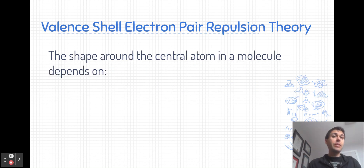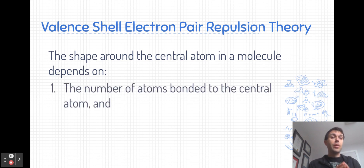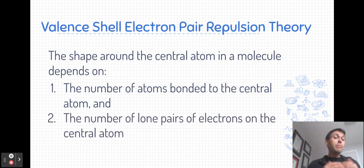VSEPR theory depends on the electrons around the central atom — those are the valence electrons that matter. When we have a molecule, there are two types of valence electrons on that central atom. We have electrons that are bonded to other atoms, so we look at the number of atoms bonded to the central atom. But we may also have lone pairs of electrons around the central atom — electrons in the valence shell which are unbonded.